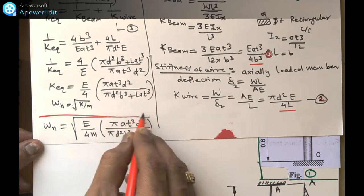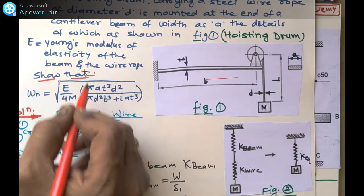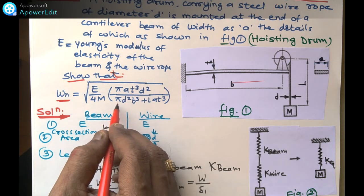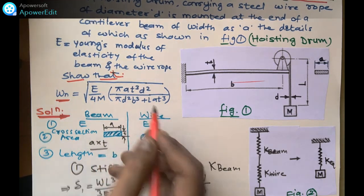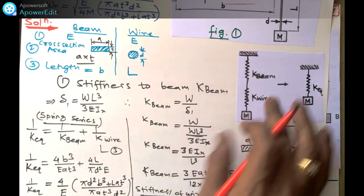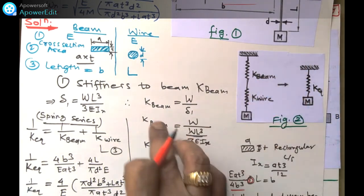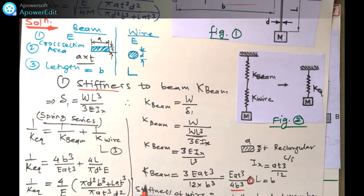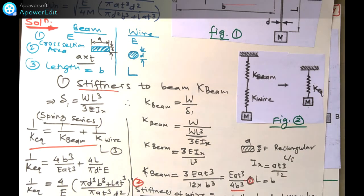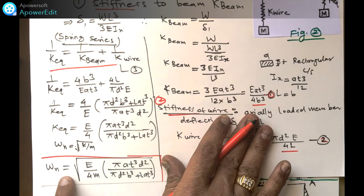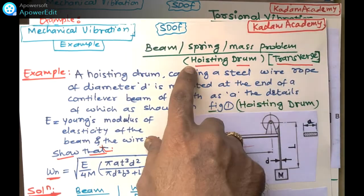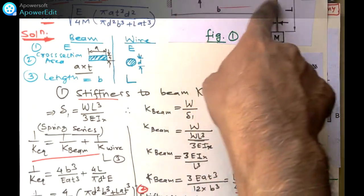So friends, this is the simple technique. By using springs in series — considering the beam and the wire each as a spring — we find the stiffness of the beam and the stiffness of the wire in two steps. Using these two equations and the equivalent spring stiffness formula, we can derive omega_n. This is the derivation for transverse vibration of a hoisting drum with springs in series.